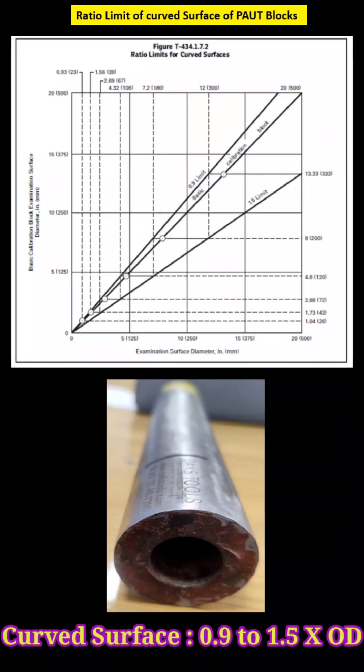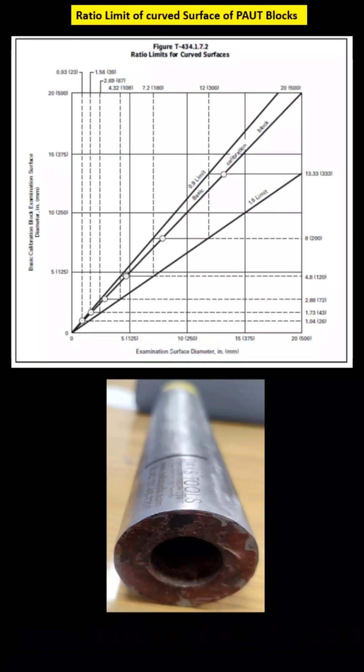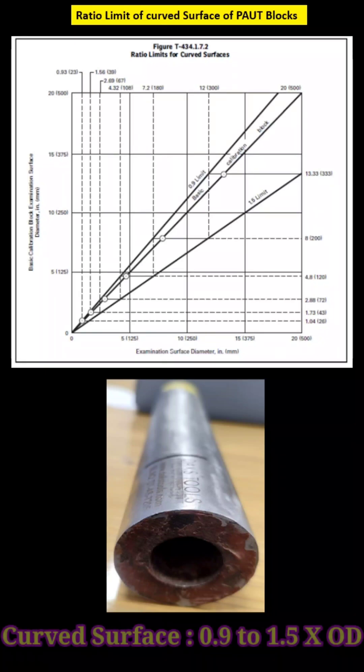But in case of boiler tube, we should require the same curvature of the block, or else there is a limit that is 0.9 to 1.5 times the outer diameter we can use.